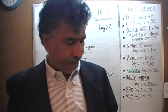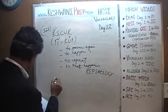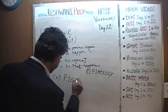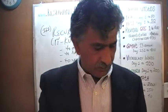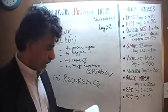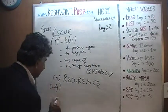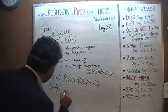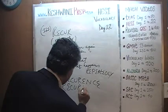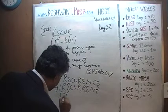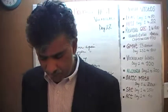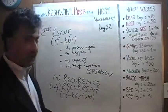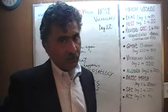Recurring — it happens repeatedly. What is the noun? The noun of recur is recurrence. The adjective: something that recurs, that happens over and over again, is recurrent — it has two R's in it. Recurrent simply means something that happens over and over again, something that happens repeatedly, something that repeats itself. Recur, recurrence, recurrent.